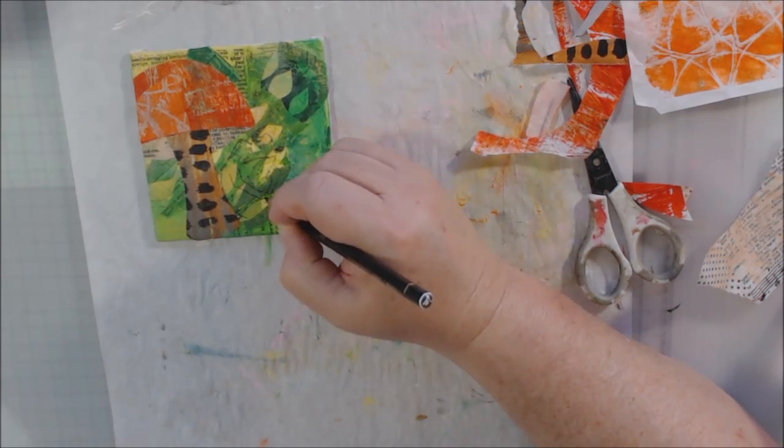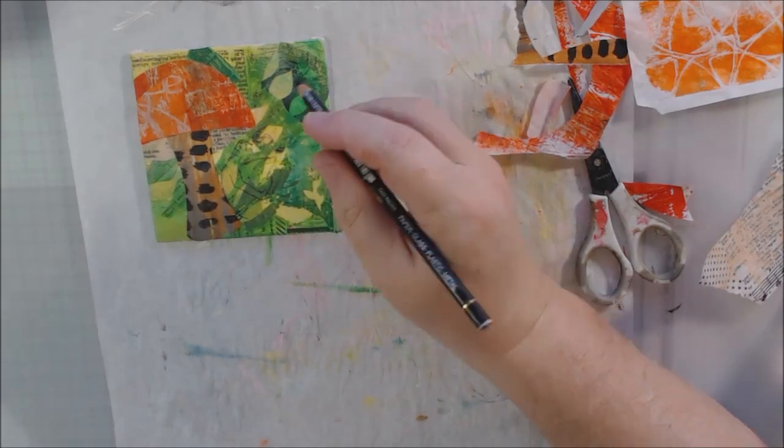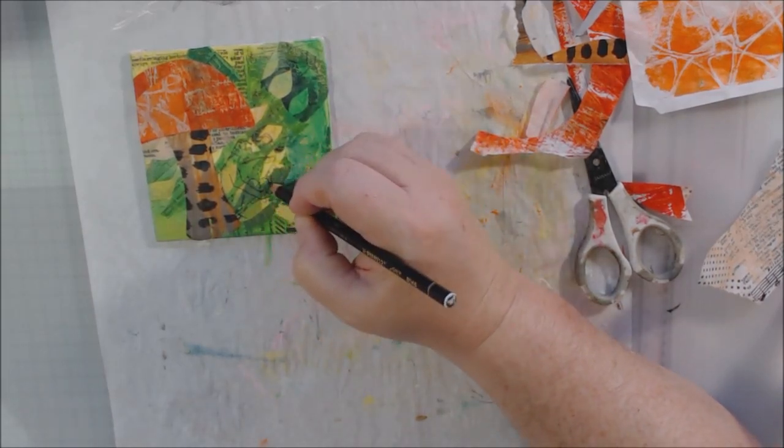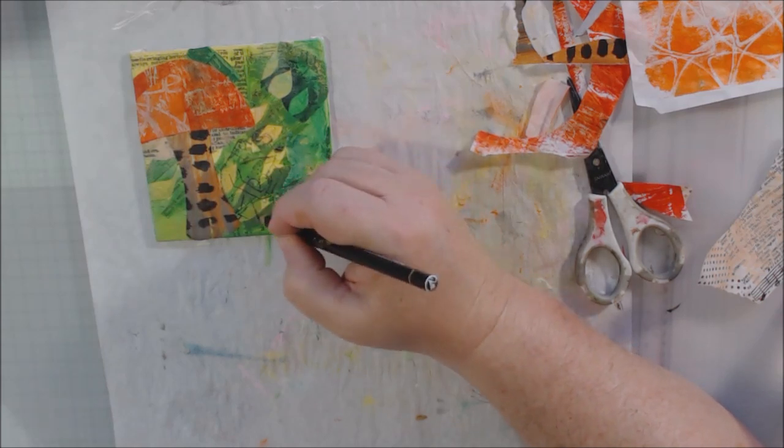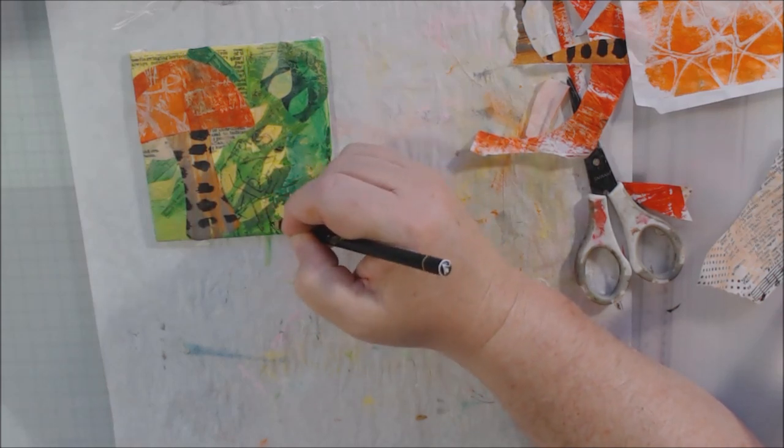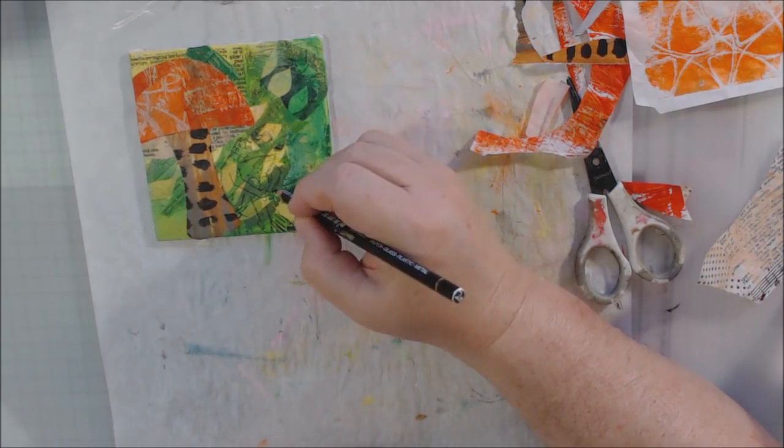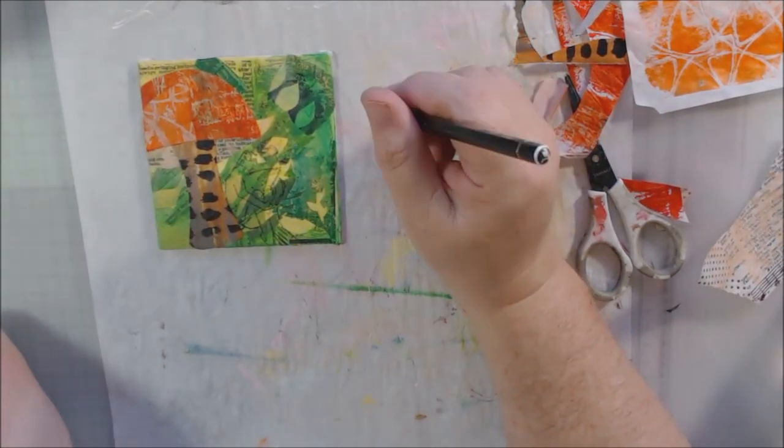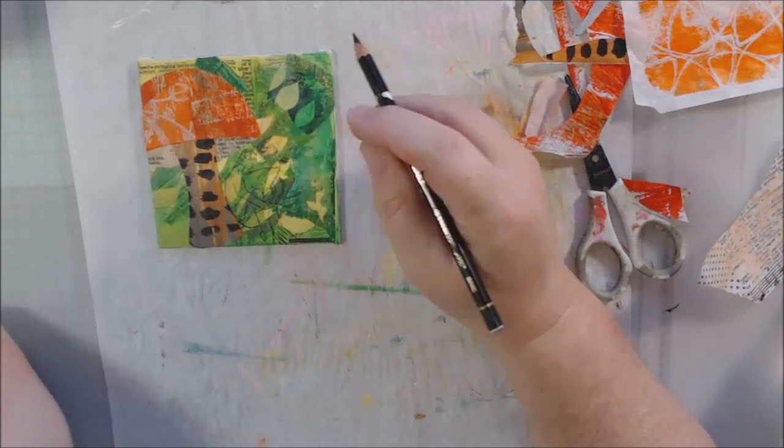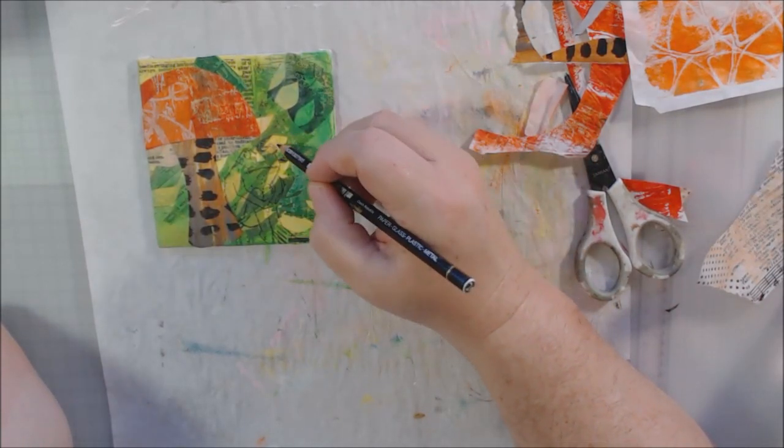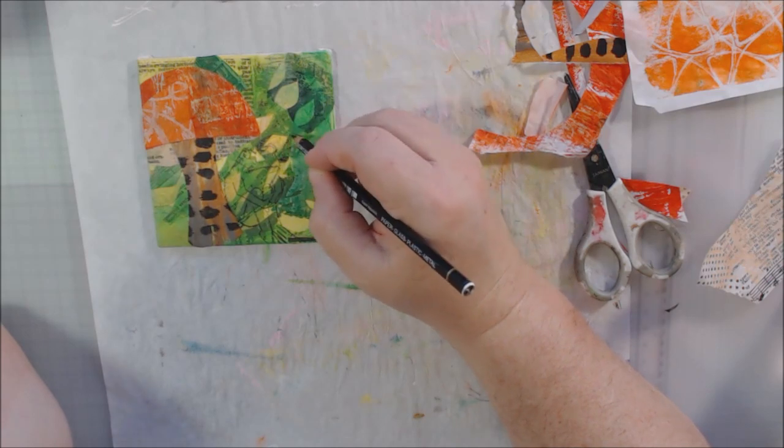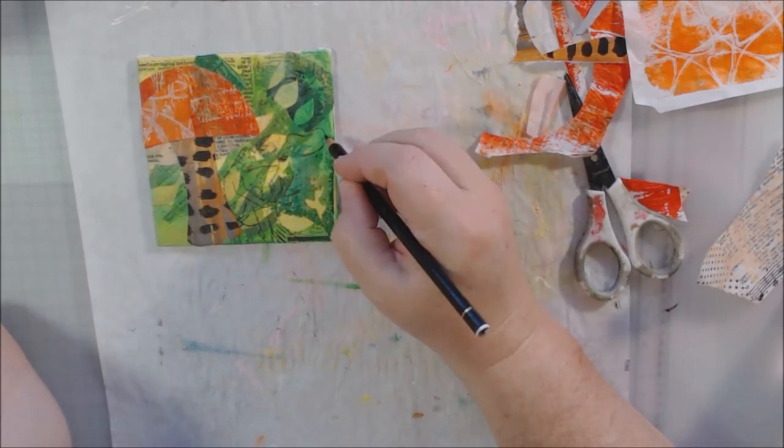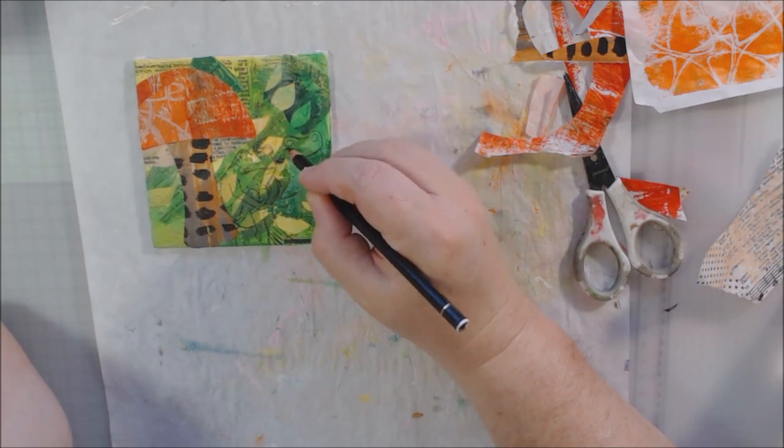So I decided to do what I call exclusion painting, which I think a lot of people call reverse painting, where instead of painting an image you're painting the opposite of the image. So you're painting the background out instead of painting on the frogs.